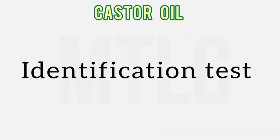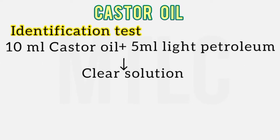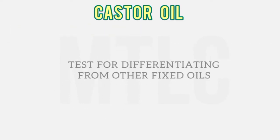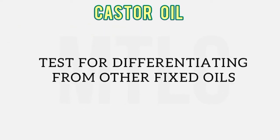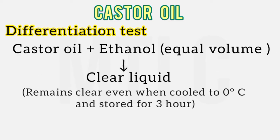For the identification test: castor oil mixed with 5 ml of light petroleum gives a clear solution, but adding 15 ml more of light petroleum causes a turbid solution to form — this confirms castor oil, distinguishing it from other fixed oils used as adulterants. In another test, castor oil mixed with ethanol gives a clear liquid; when cooled to 0 degrees Celsius and stored for 3 hours, it remains clear.